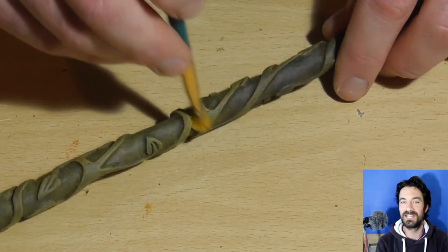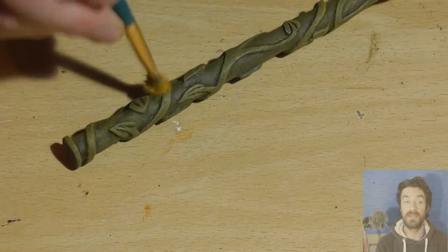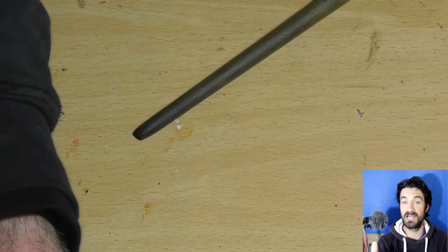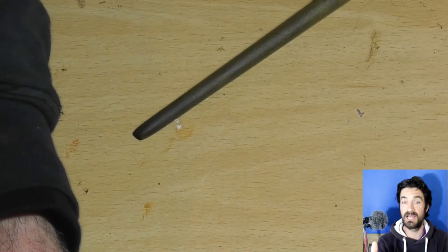The last layer of this was then using Devlan Mud, which is actually a Citadel Miniatures ink, it's a wash, and as you saw then it seeps into all the gaps and makes the dark points deep into the wand carving really stand out.